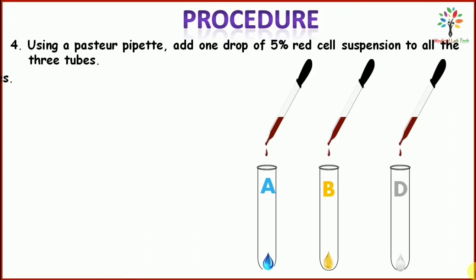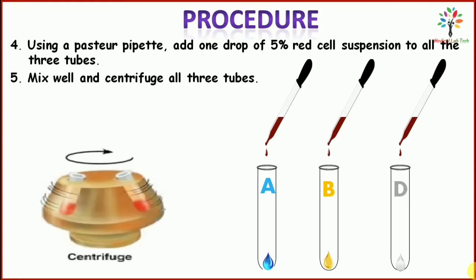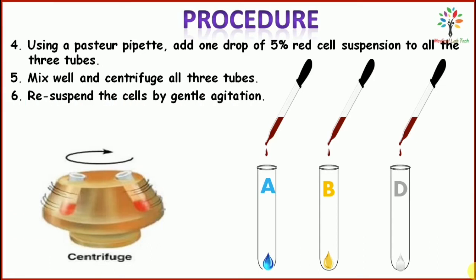Mix well and centrifuge all 3 tubes at 1500 rpm for at least 1 minute. During centrifugation, the rate of antigen-antibody interaction will increase. Remember to balance the tubes prior to centrifugation. Then resuspend the cells by gentle agitation and observe for agglutination.